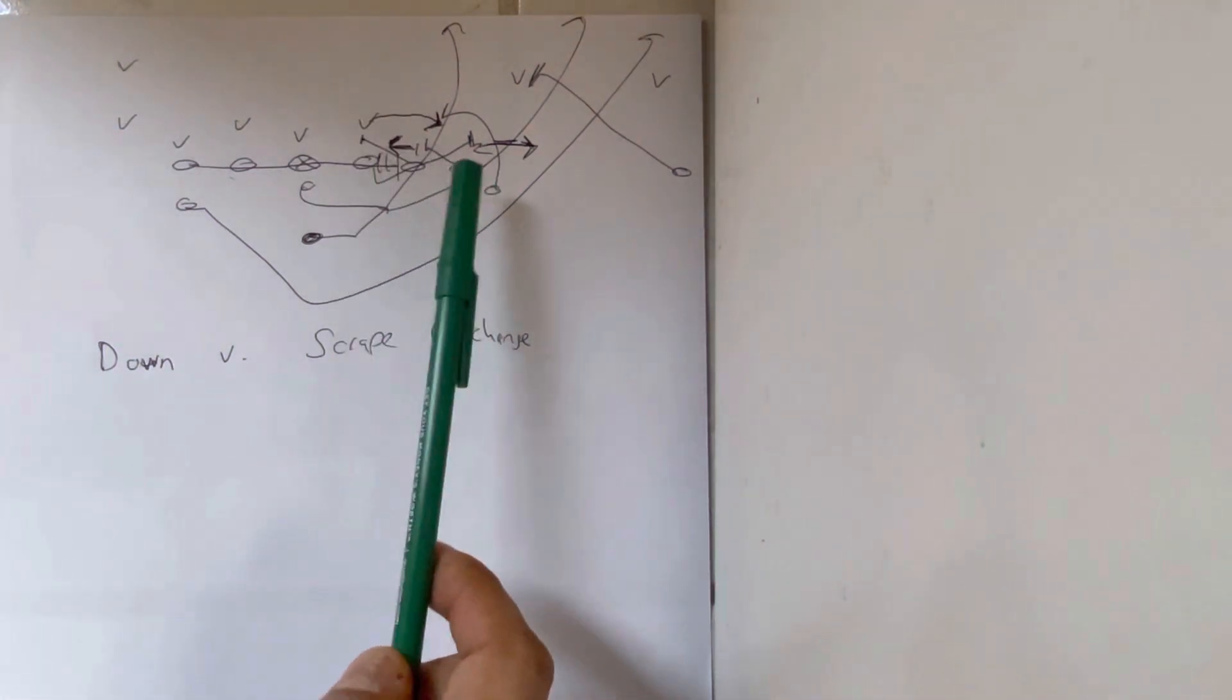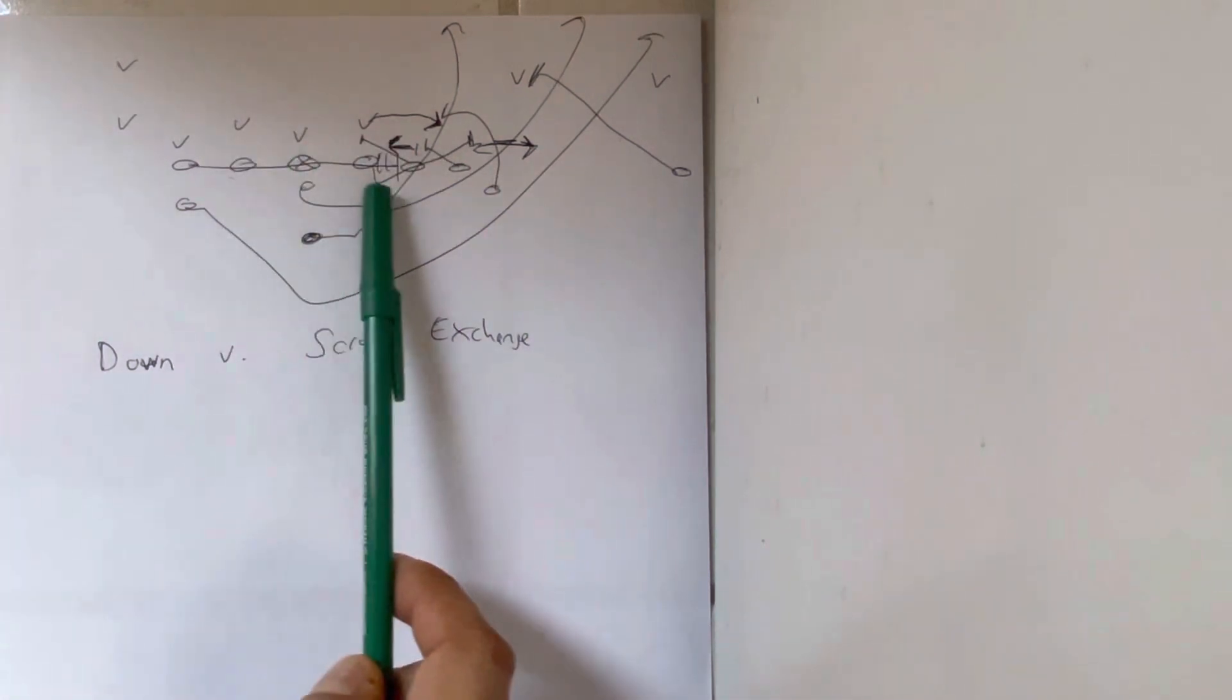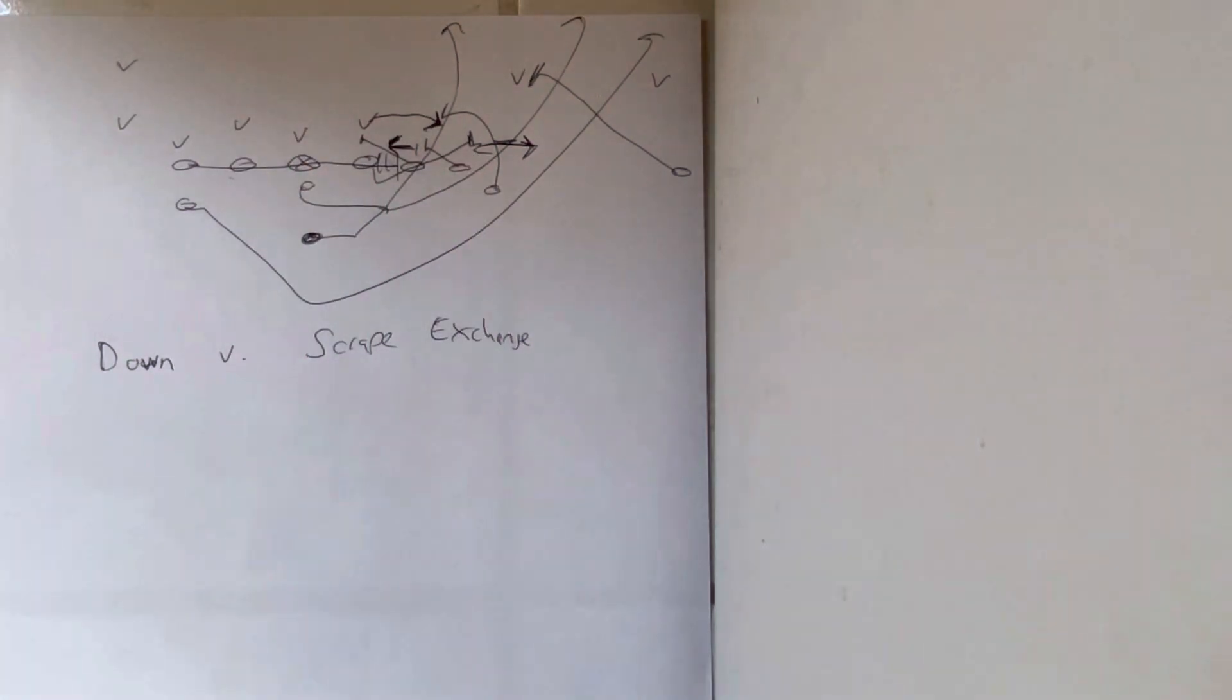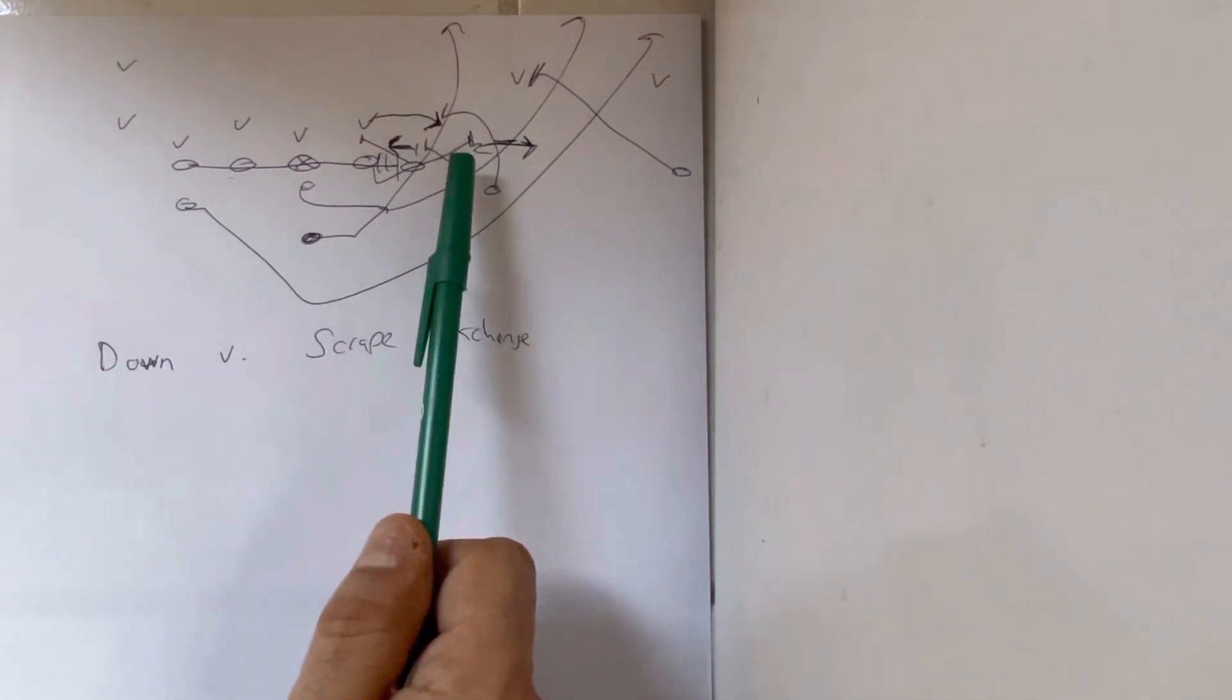The two tackles are going to block down. The guard is going to trap the first threat that shows off the heavy tackle. So if he jumps to the pitch, it creates a wider void, and bam, you really get him good.